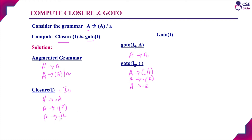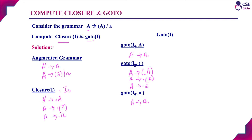Next, we need to perform the goto operation for A derives dot A. That is goto(I0, A) — considering the production, we add A derives A dot. Now we have completed the goto operation for state I0. The new states are: this is state I1, I2, and this is state I3.